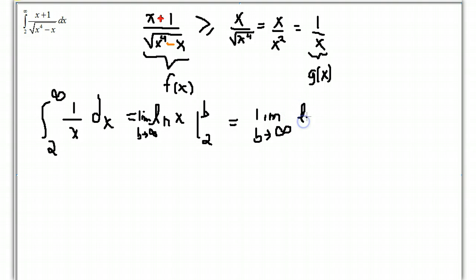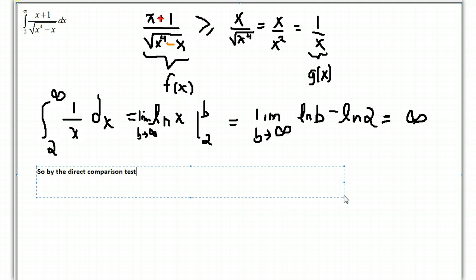And so, because the integral of 1 over x is divergent, then we can conclude that using the direct comparison, since you are bigger than a function that has infinite area, then you have no choice but to also have infinite area. And so, by the direct comparison test, the integral that you have will also diverge.